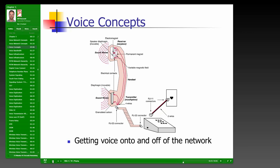An important point about connectivity: telephone systems use RJ11 jacks between the base station and the wall jack, as opposed to data communications, which use RJ45 jacks. RJ stands for registered jack — different jack sizes support different numbers of wires. RJ45 supports eight wires; RJ11 has six connectors, even though only two wires are used in the telephone system.